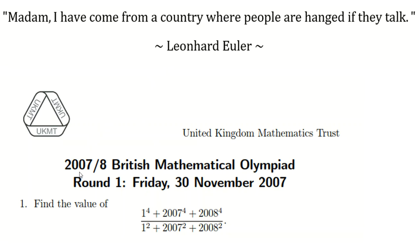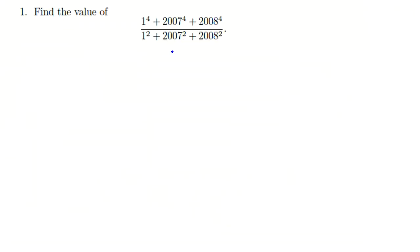They call it BMO 2007-8 round one. The problem is to find the value of this expression. When we see something like this, we use a variable x. It's easier for working with that because we can't use calculators. So I can consider 2007 as x.